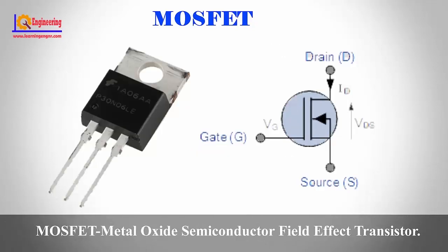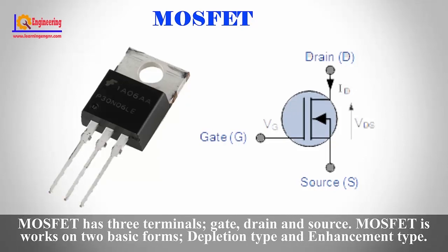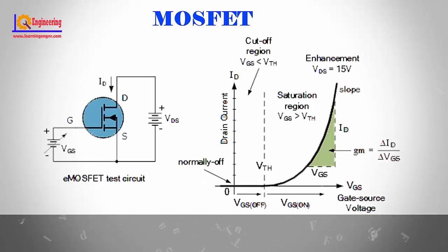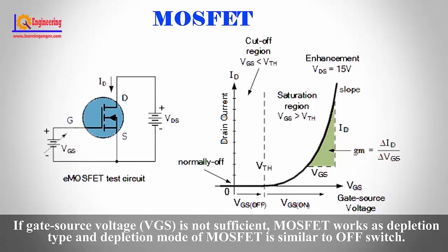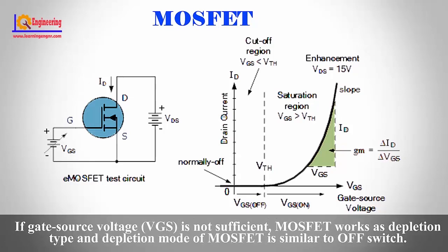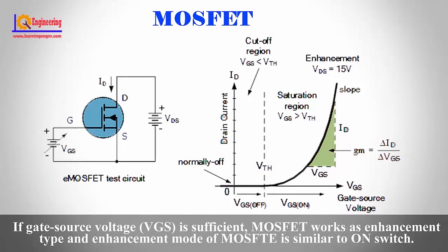MOSFET — Metal Oxide Semiconductor Field Effect Transistor — has three terminals: gate, drain, and source. MOSFET works in two modes: depletion type and enhancement type. If the gate-source voltage VGS is not sufficient, the MOSFET operates in depletion mode, which is similar to an off switch. If VGS is sufficient, the MOSFET operates in enhancement mode, which is similar to an on switch.